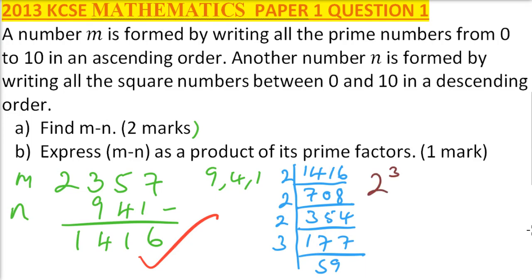2 cubed multiplied by 3 multiplied by 59. So that is how you do it. You get yourself 1 mark, and here you get 2 marks.